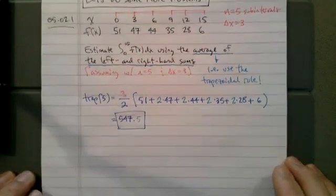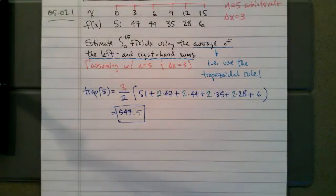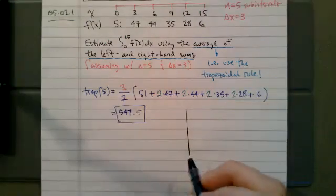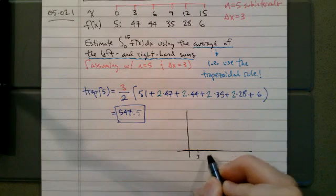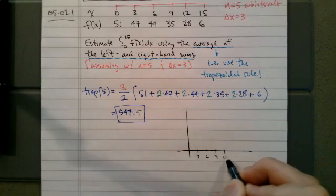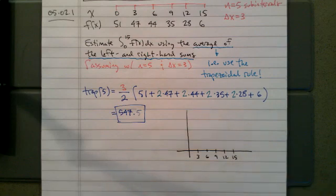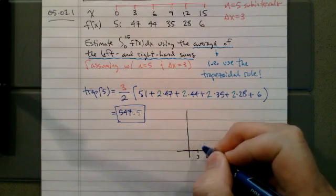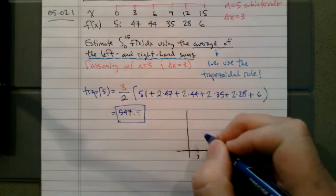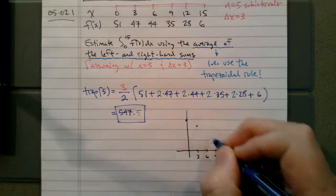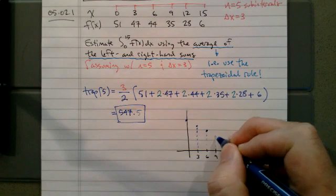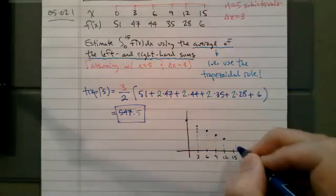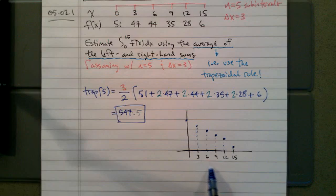Graphically on the x-axis, on the x-axis graphically we're putting a mark at 3, 6, 9, 12, and 15 and we're imagining we have just these values. So we got 0, 51, 51, 47, 44, 35, 28, and 6. And so here are the five.